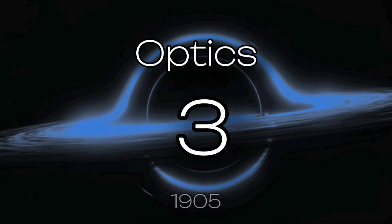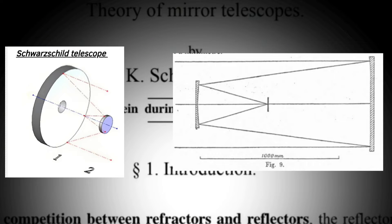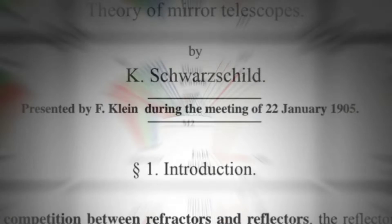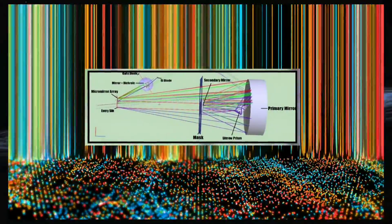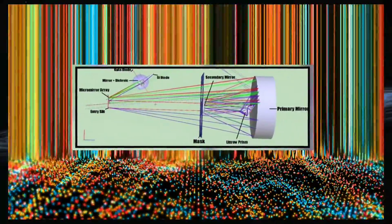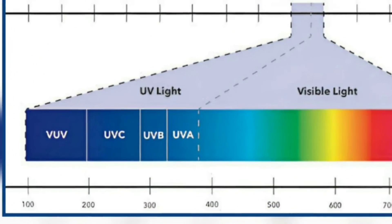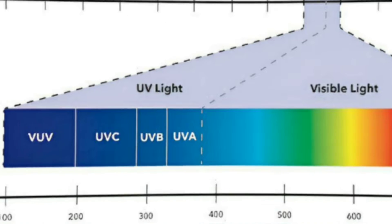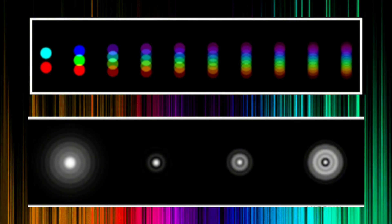3. Work on optics. In 1905, Schwarzschild proposed a new type of optical system for telescopes, which utilized two mirrors to correct for aberrations. Building upon this concept, he later developed the Schwarzschild spectrometer, which applied similar principles to spectroscopy. The design was a significant advancement in the field of spectroscopy, particularly in the ultraviolet range where aberrations are more pronounced and traditional optical systems struggled to achieve high resolution. Schwarzschild's innovative use of two concentric spherical mirrors allowed for the correction of both spherical and chromatic aberrations, resulting in sharper and more accurate spectral images.